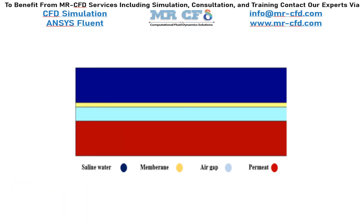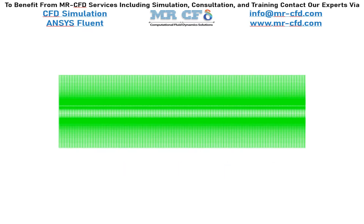The present model is drawn in two dimensions using Design Modeler software. The model is rectangular in shape and consists of four parts: hot salt water flow space, cold water flow space, air gap, and membrane as porous medium. The meshing has been done using ANSYS Meshing software with a structured mesh type. The element count is 344,400 and a boundary layer mesh is also used.